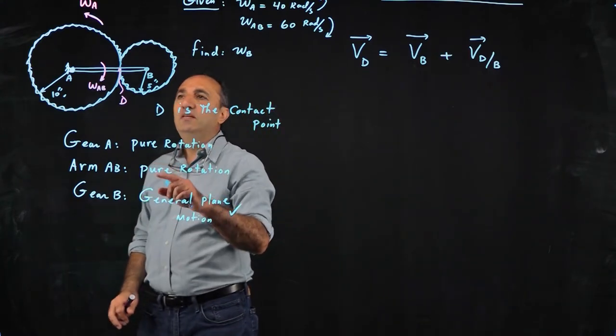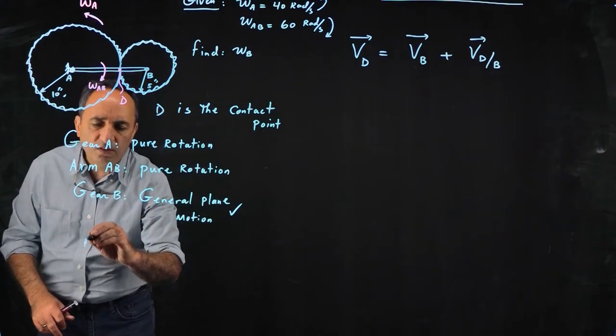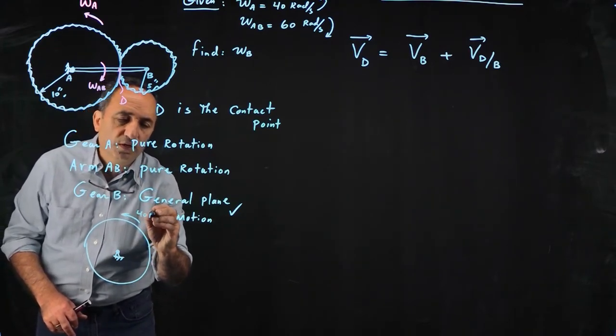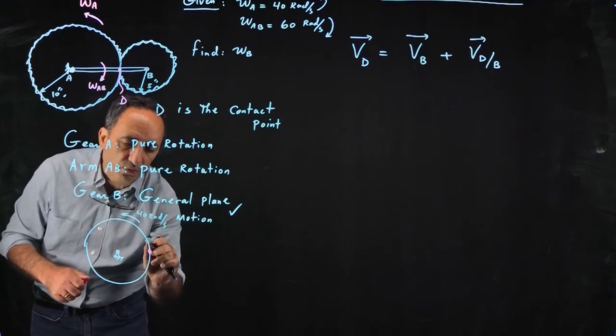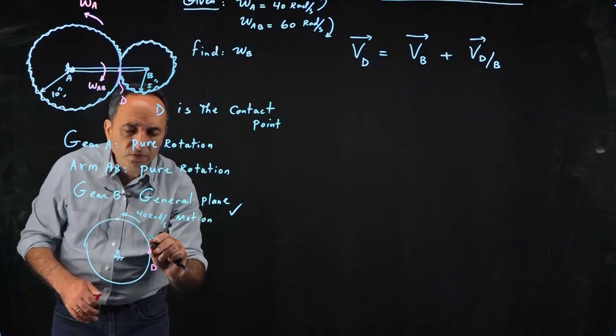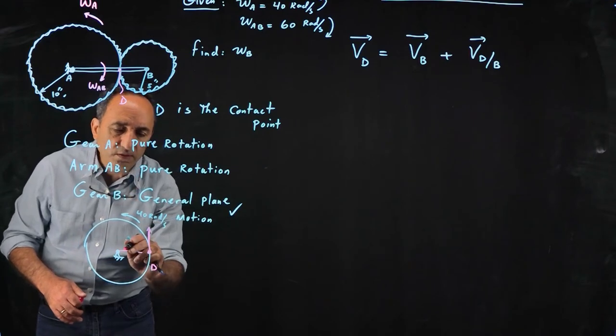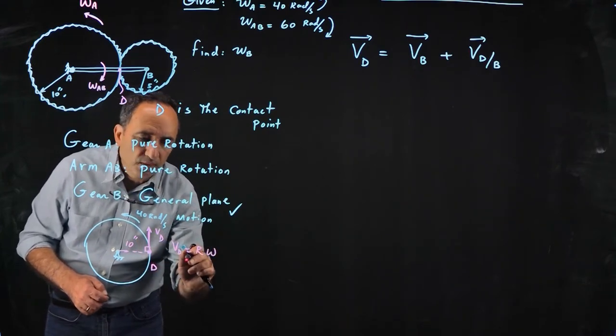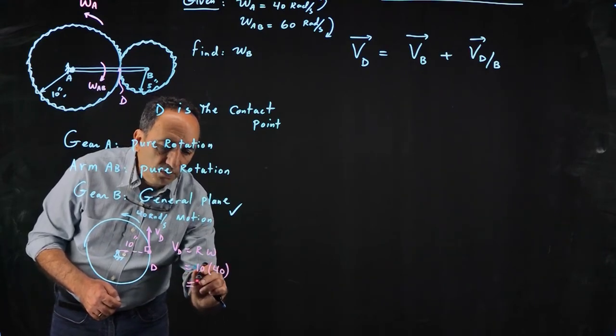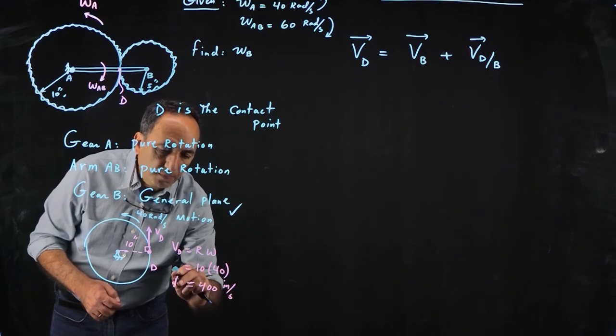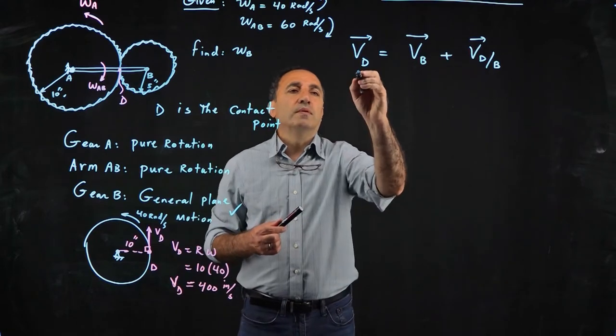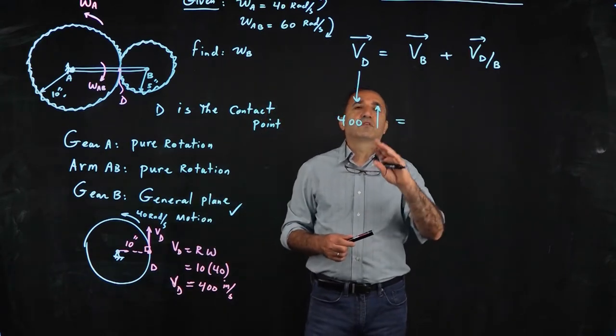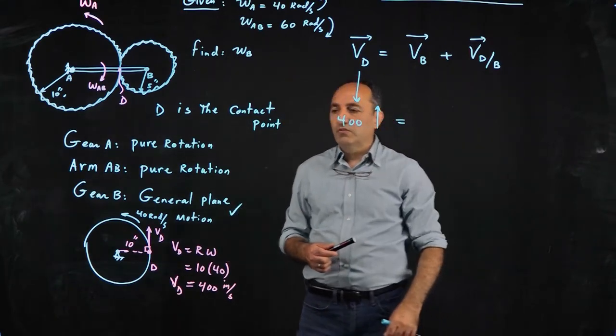Now, I can easily find velocity of D and velocity of B from the information I have. So if you just look at gear A rotating about its center at 40 radians per second, what would be velocity of D, which is the contact point on both gear A and B? It has to be R omega in the direction of omega, 90 degrees to this radius. So velocity of D becomes R omega. R is 10 inch times omega, which is 40. So we're talking about 400 inches per second pointing up.